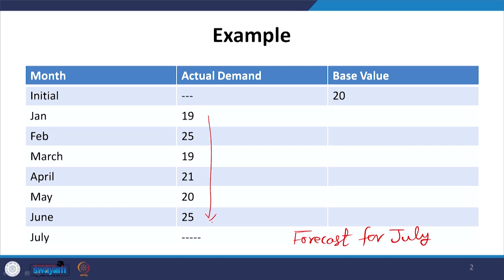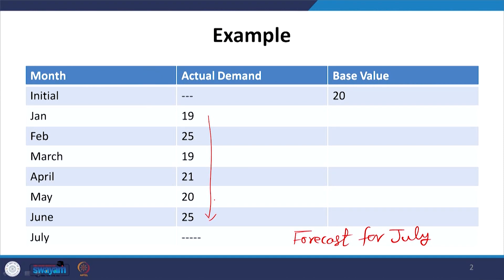If my moving average period is 3, I will take the average of April, May, and June's demand, and that average will be the forecast for July. If I go with weighted moving average, I assign a weight of 0.5 to June, 0.3 to May, and 0.2 to April, and the sum of the products of weight and actual demand gives the forecast for July. These two methods we have already discussed. In today's session, we will discuss how to apply the exponential smoothing model to determine the forecast for July.